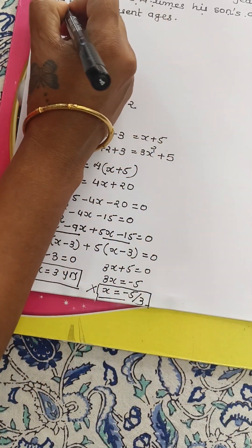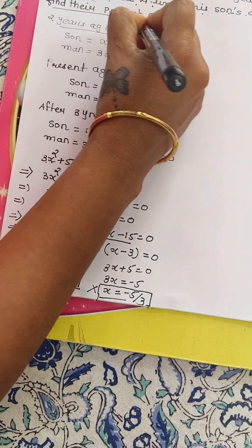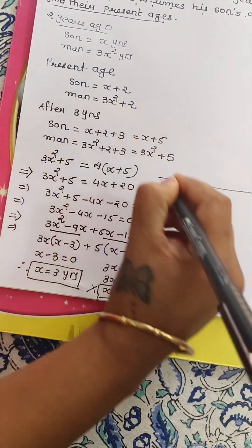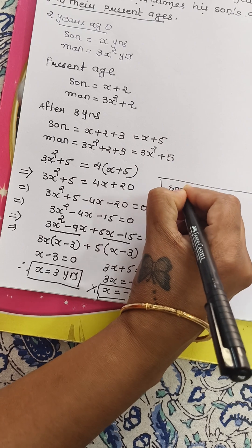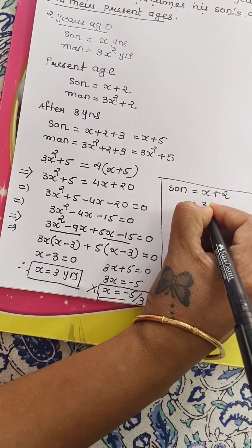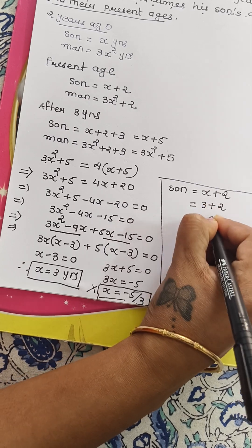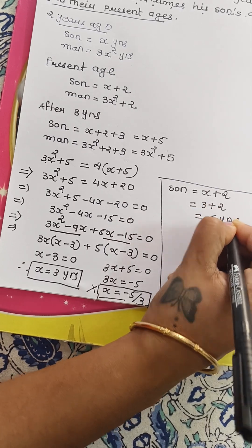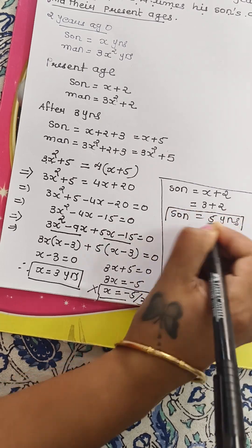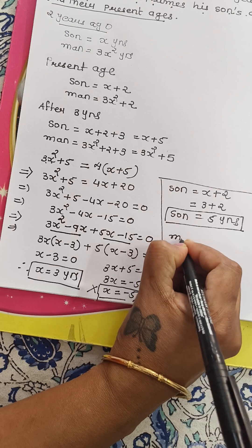Now they want us to find the present ages. So what are the present ages? We have already written here. Son, X plus 2. Now X is 3. So 3 plus 2, 5 years. So present age of son is 5 years. Son is 5 years old.